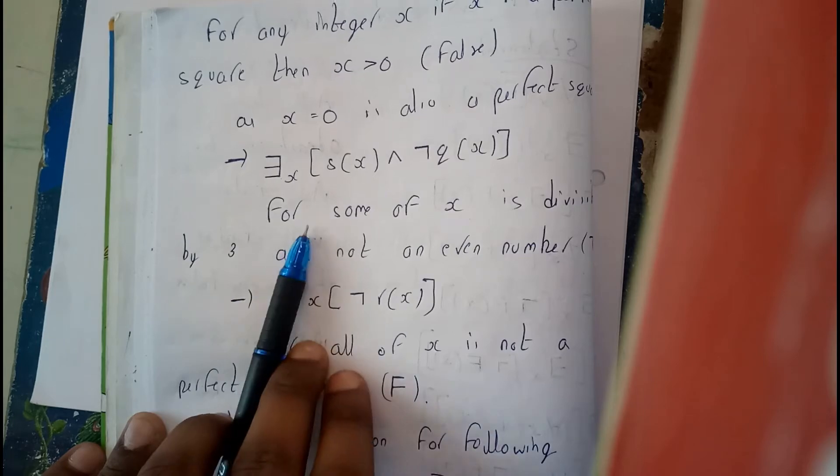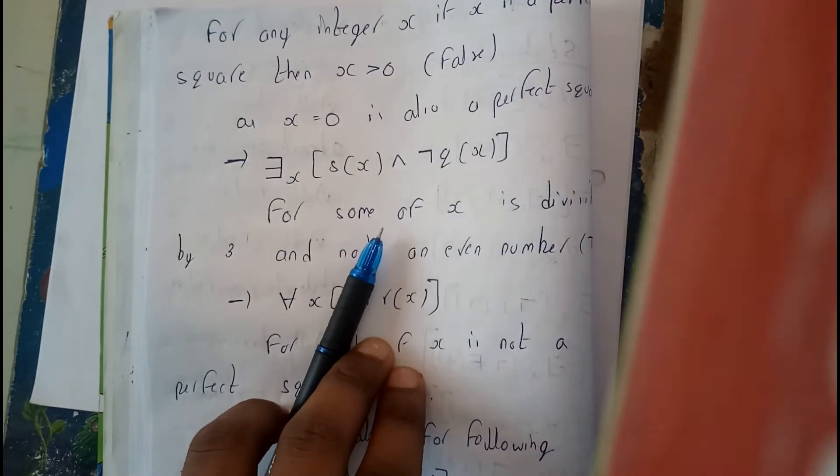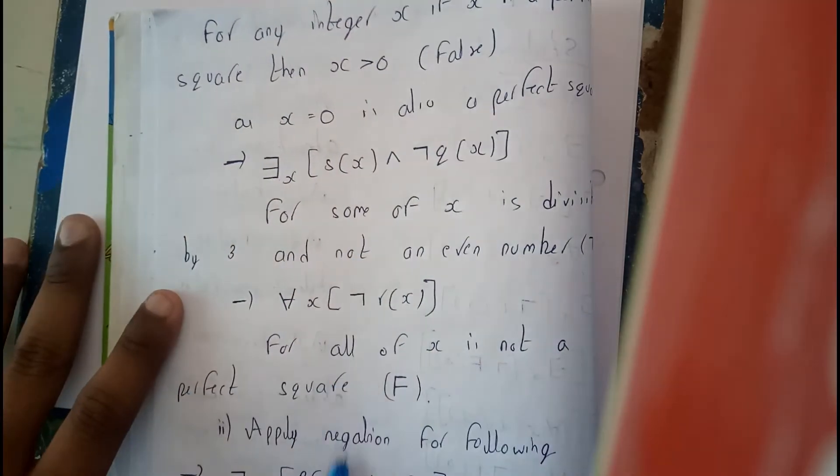Is this true always? Yes. It's divisible by 3 for some. At least, he's just saying for some. He's not saying for all. So obviously, it will be true. Next statement.